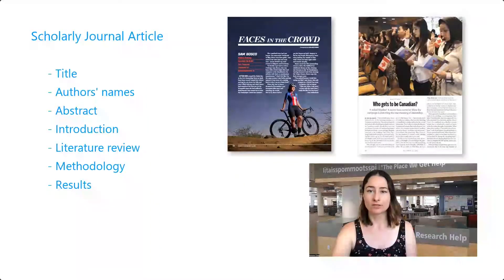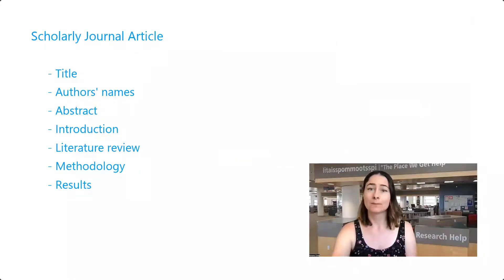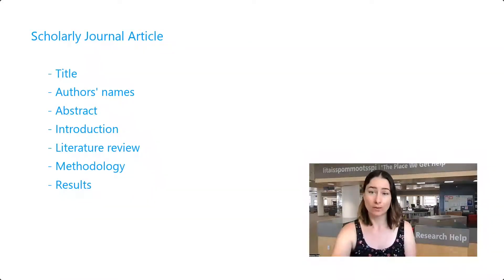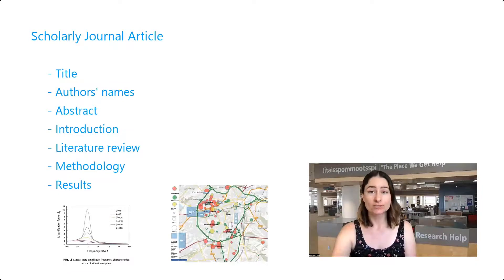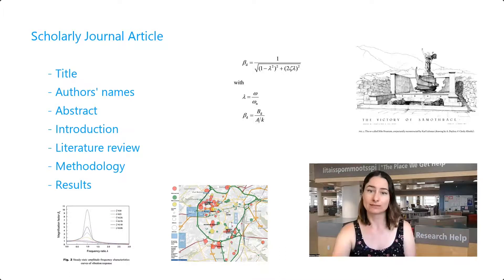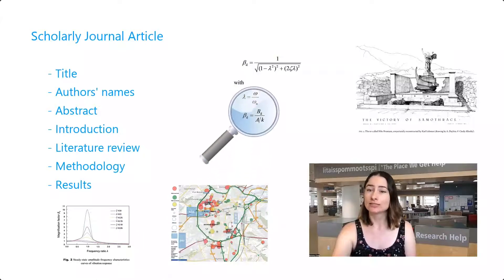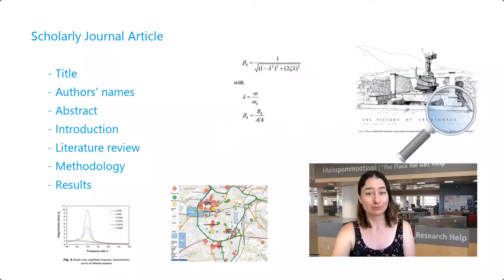Unlike other kinds of articles, scholarly journal articles very rarely contain pictures. Many contain only text, as in paragraphs or quotations. However, depending on the topic you're researching, the article may also contain things like graphs, charts, equations, and other visual depictions of the data or the process. These visual representations are included only as a means to factually represent the research. You should pay careful attention to information presented in these ways to ensure that the data matches the conclusions that the authors make from them.